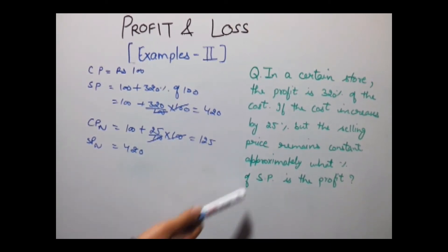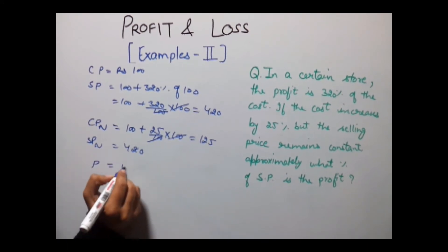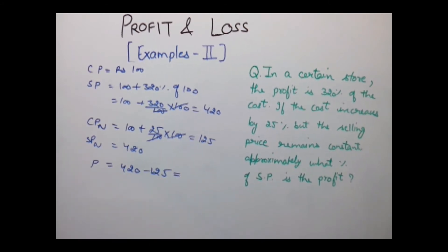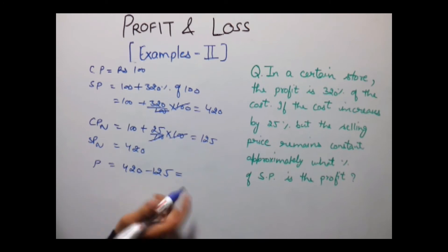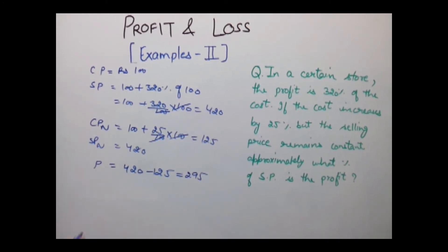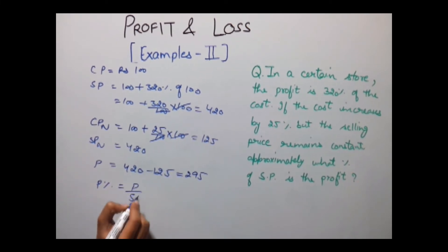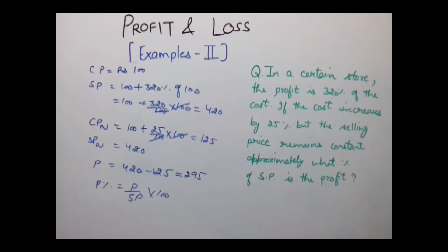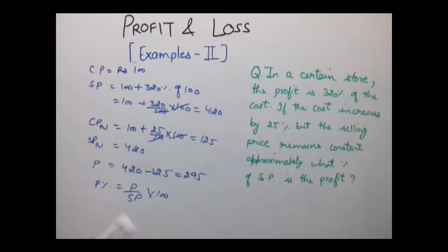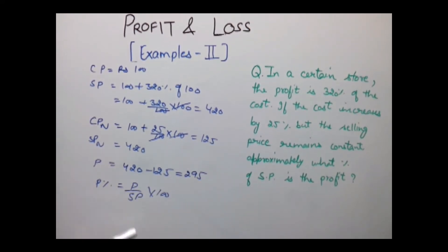Now we need to find out that if the price remains constant, what percentage of selling price is the profit. So it is mentioned what percentage of selling price, so first calculate the profit which is 420 minus 125, which is equal to 295. Now profit percentage is equal to profit upon SP into 100. Generally we calculate profit percentage as profit upon CP into 100 percent, but as it is mentioned in the question what percentage of selling price, so we will take SP.